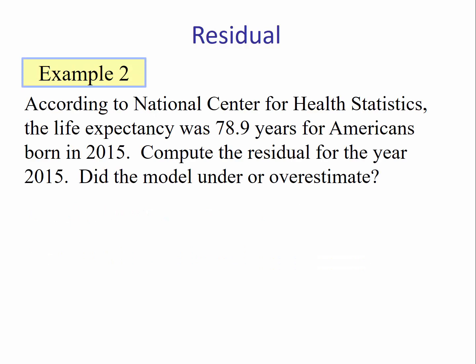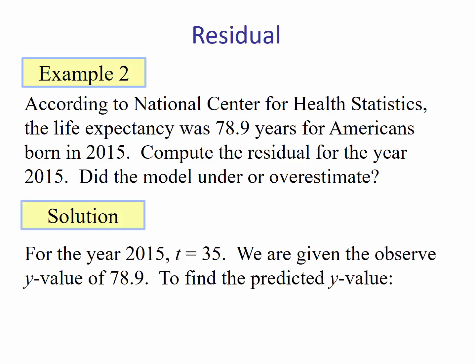Example 2: According to the National Center for Health Statistics, the life expectancy was 78.9 years for Americans born in 2015. Compute the residual for the year 2015. Did the model over or underestimate? Solution: In this case, t is 35.